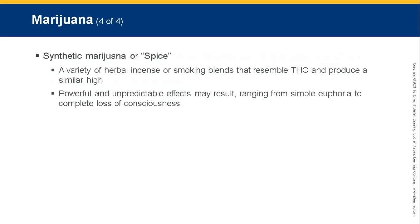Synthetic marijuana, or spice, consists of herbal incense or smoking blends that resemble THC and produce a similar high. Effects are powerful and unpredictable, ranging from simple euphoria to complete loss of consciousness.